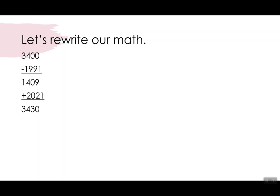I'm just going to rewrite it horizontally, right? That's how we usually do math. So I have my 3400 minus 1991. I'm going to skip the subtotal and I'm going to go ahead and add the 2021. Now watch. I'm just going to do this little trick where I'm going to switch the order. So I'm going to put the 2021 first and the 1991 later.